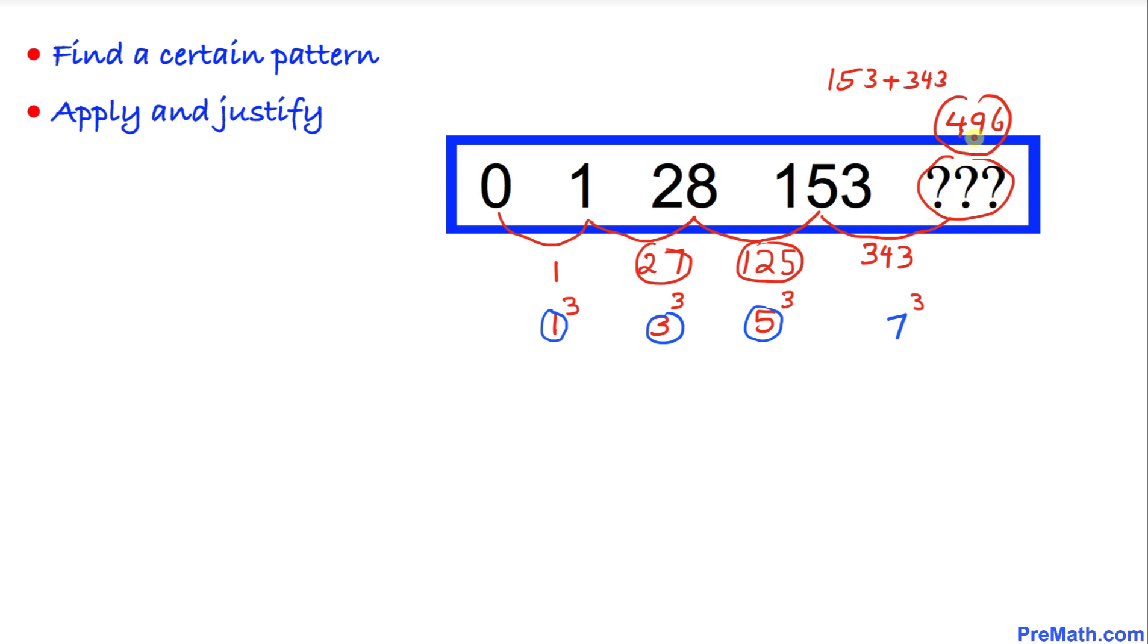Because if we want to see the common difference, 496 minus 153 is going to be 343.